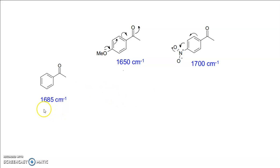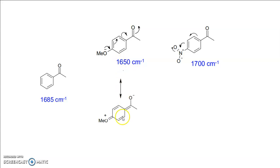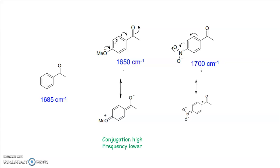For example, acetophenone gives a CO stretching frequency of 1685 cm⁻¹. Substituting an OMe group at the ortho or para position decreases the frequency towards 1650 cm⁻¹ due to increased conjugation of the OMe group with the carbonyl group. While the NO₂ group in the para position increases the absorption frequency towards 1700 cm⁻¹ due to decreased conjugation.